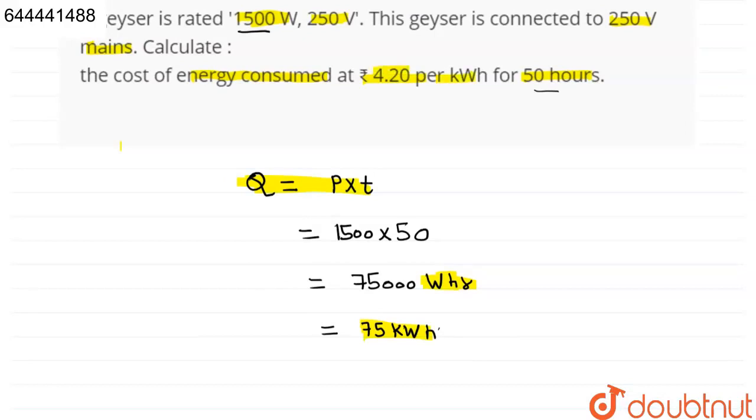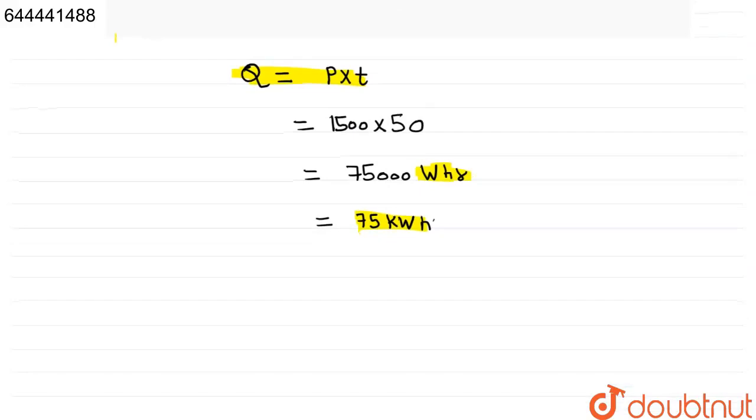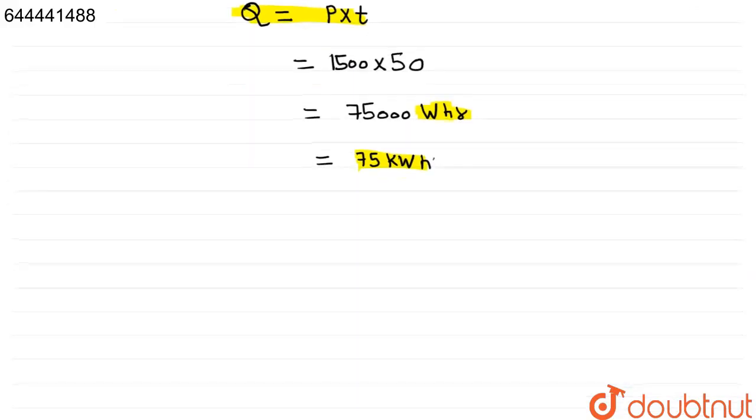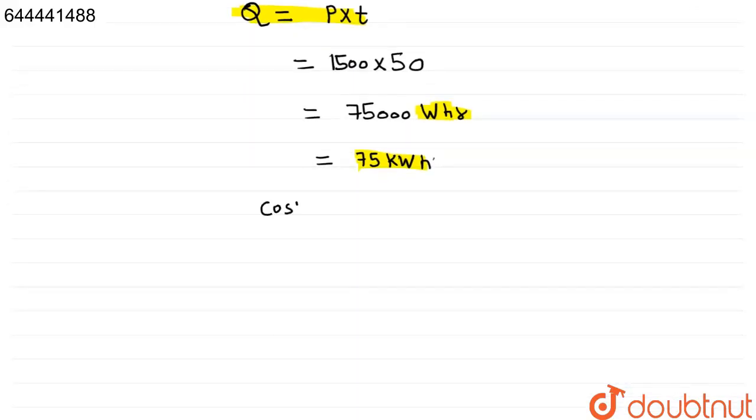The cost given is 4.20 per kilowatt hour. So cost per kilowatt hour is given, cost per kilowatt hour is equal to 4.2.